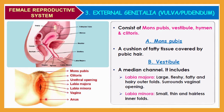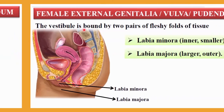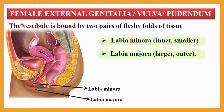The vestibule is a space with two apertures: the upper urethral orifice (opening of the urethra or urinary tract) and the lower vaginal orifice. The vestibule is bound by two pairs of fleshy folds of tissue — the smaller inner fold called labia minora and the larger outer fold called labia majora.